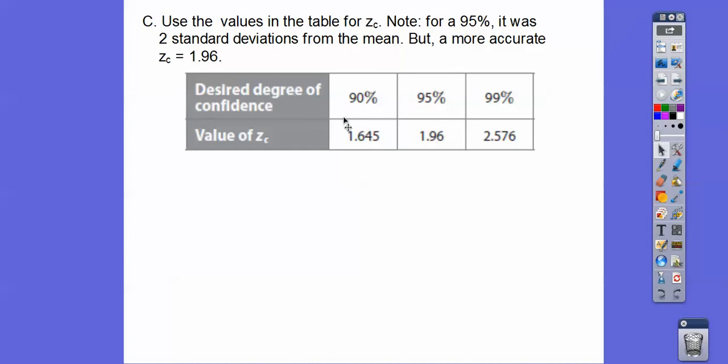It's actually 1.96 for a 95% confidence interval. Don't let that worry you. If we have a 90% confidence interval, the Z goes next to the radical. If it's 95, we put 1.96 there. If it's 99, we put 2.576 there.